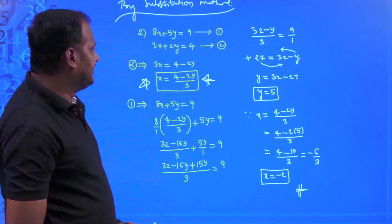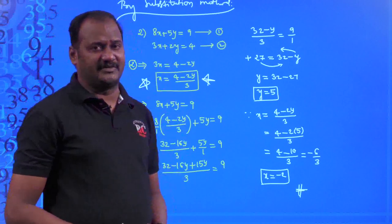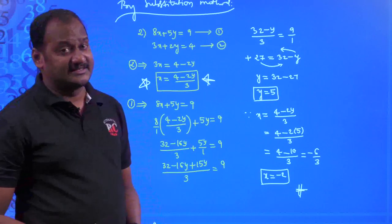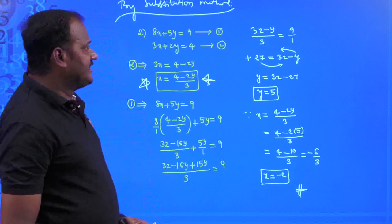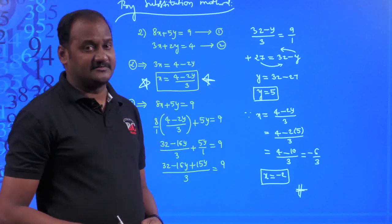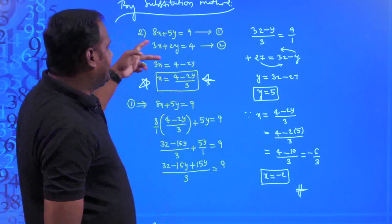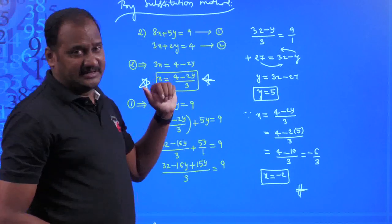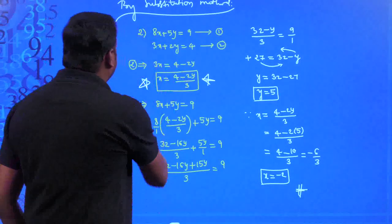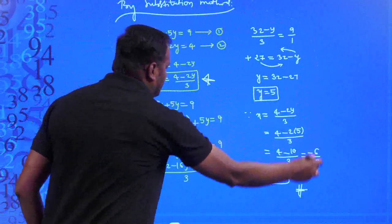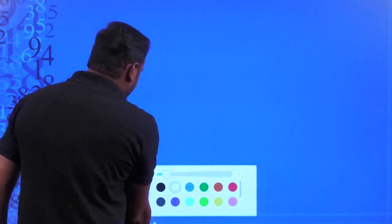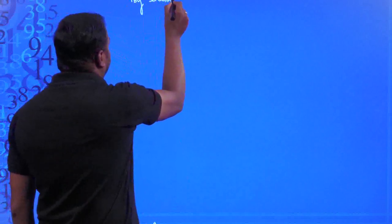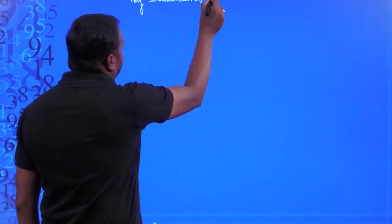If we think logically, the substitution method takes a lot of time to find the values of x and y. That is why there is one more method — the elimination method. Let us see how to solve a pair of linear equations in two variables by the elimination method, using a smaller example with smaller coefficients.